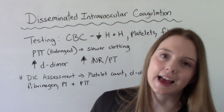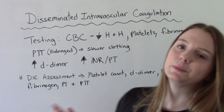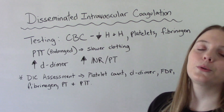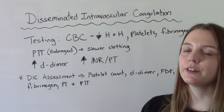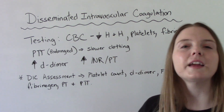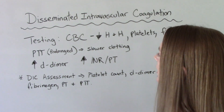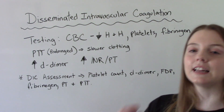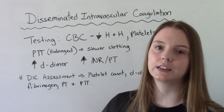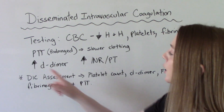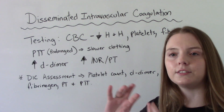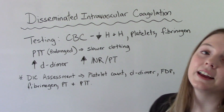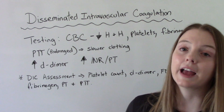When it comes to labs and testing for DIC, the first thing we're going to do is a CBC. If they have DIC, it's going to show decreased hemoglobin and hematocrit, decreased fibrinogen, and decreased platelets — which makes sense. We're also going to do a PTT, which is going to be prolonged, because clotting is slower. We'll do a D-dimer, which checks the breakdown products of clotting — it's going to be increased. And the INR and PT are also going to be elevated.